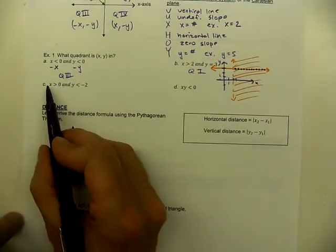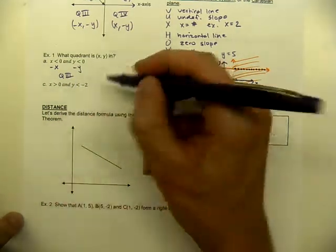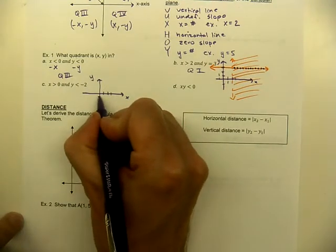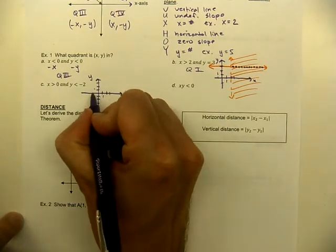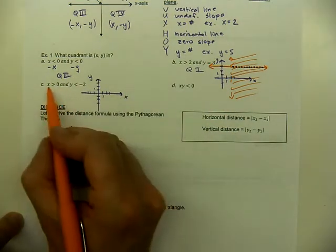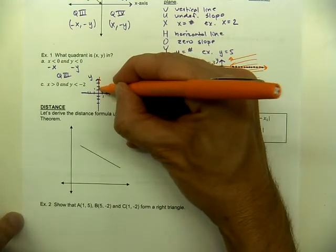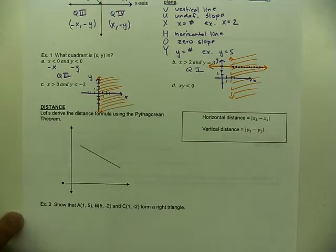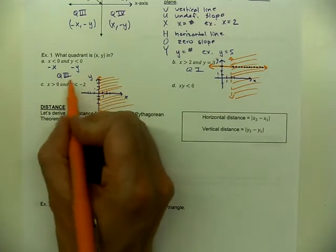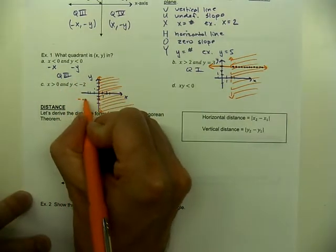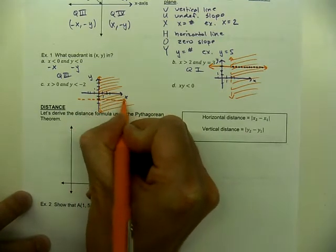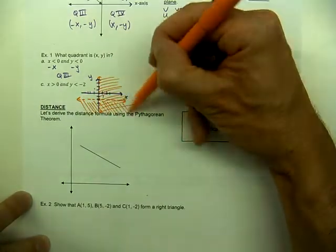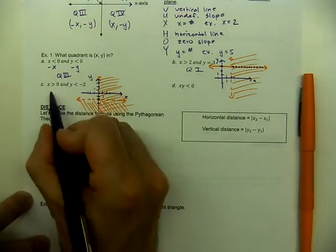Part C: X greater than zero and Y less than negative two. On a sketch, X greater than zero gives a dashed vertical line at zero, shading to the right — quadrants one and four. Y less than negative two gives a dashed horizontal line at negative two, shading everything below. The overlap of those shaded regions is in quadrant four only.